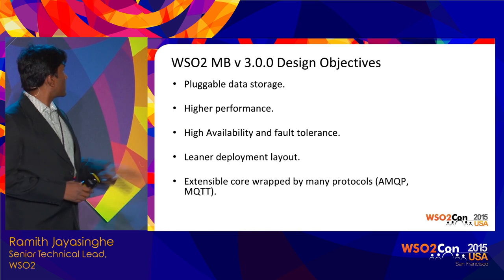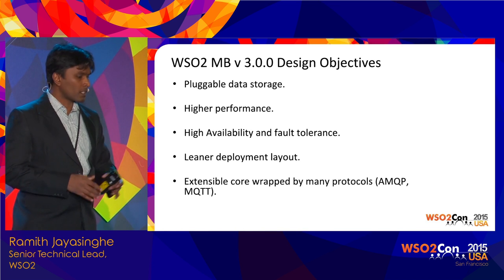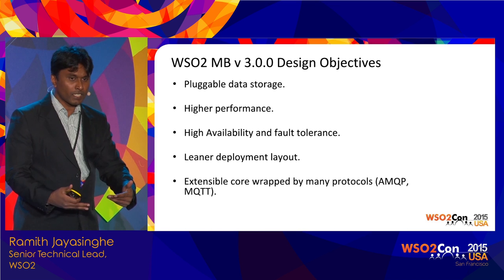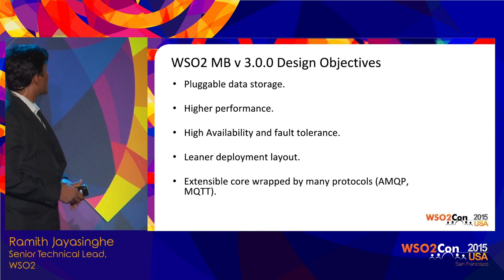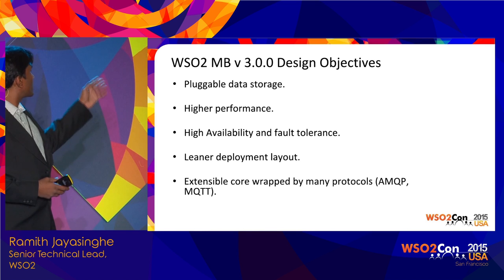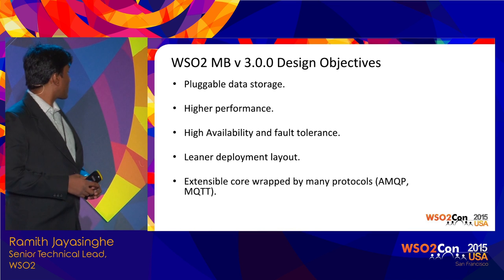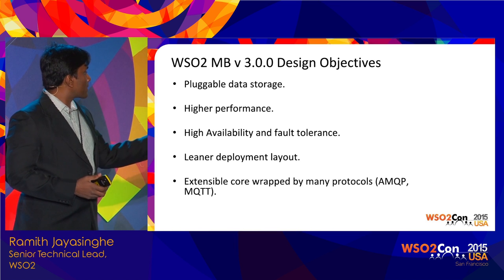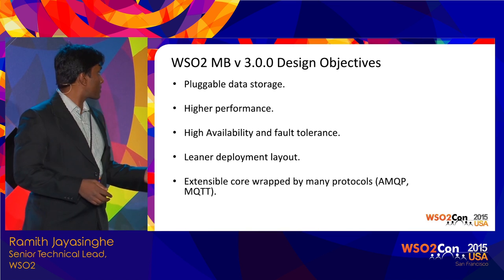More design objectives for this specific release: we were relying on Cassandra, but we wanted a pluggable architecture in the data persistence layer. So we separated out the two parts and defined clear programming interfaces. We made performance improvements leading to higher performance and a simplified clustering story, resulting in a leaner deployment layout. We also want to keep building on this core and wrap it with whatever protocols are needed — starting with MQTT and AMQP.